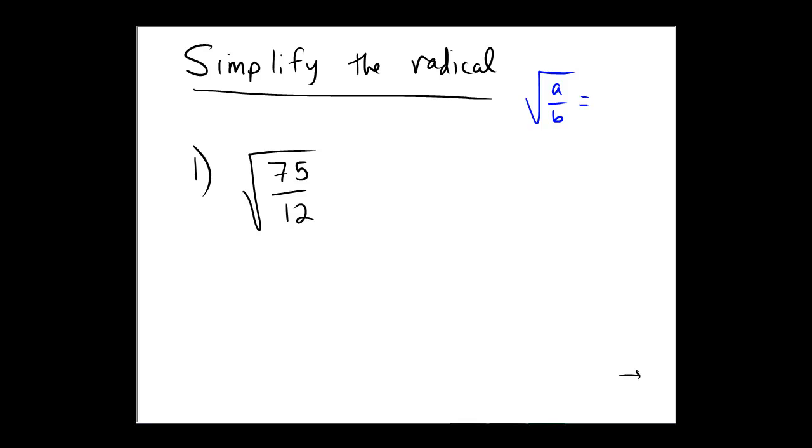Let's simplify a radical expression. In order to do this problem efficiently, I'm going to recall a rule that we discussed in class. Recall that the square root of a over b is equal to the square root of a over the square root of b.